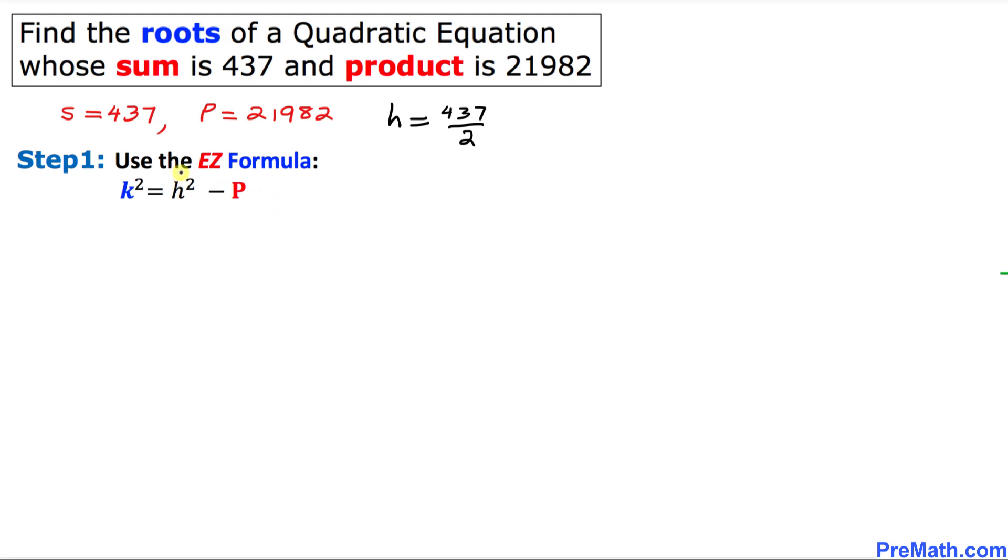The very first step is we are going to use this easy formula K square equal to H square minus P. Let's solve for K. So K square equal to H in our case is 437 divided by 2. We are going to take the square of that one minus P is 21982. Let's go ahead and take the square of 437 over 2.